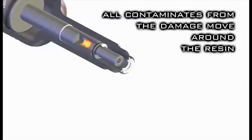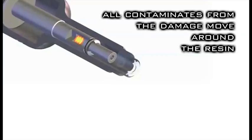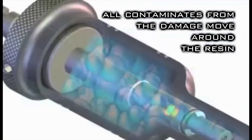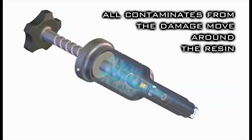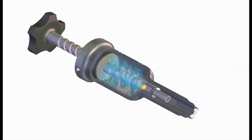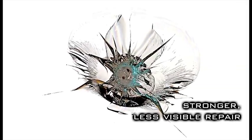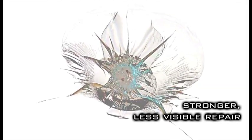And since you've gone to the trouble of making the damage as contaminant-free as possible, resin isolation allows for the resin to remain contaminant-free. Instead of moving all of the contamination from the damage through the resin, resin isolation means that these contaminants move around the resin, allowing for clean resin to be introduced into the damage. This means a stronger and less visible repair.